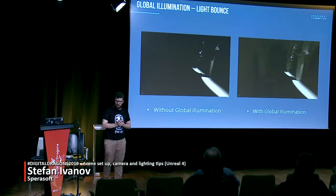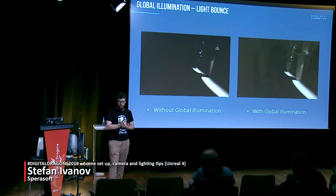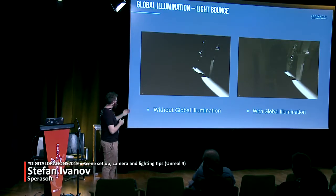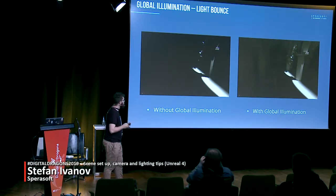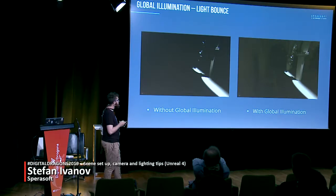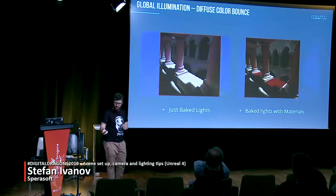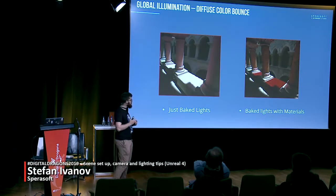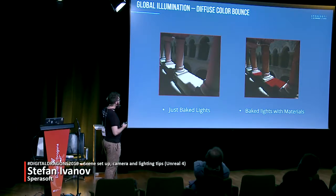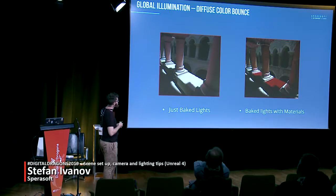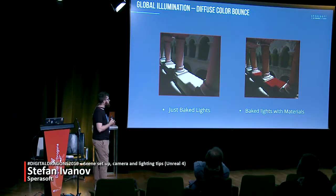Here I want to show a quick example of what I mean by global illumination and bouncing lights. You can see two examples: on the left, the room is completely dark despite the light source, because there's no bouncing. On the right, because of the bouncing lights, we get a more lit environment. The second part is about color picking — there's a red carpet here, and you can see on the left that the columns pick up a little of the carpet color. This is a feature you get with global illumination.